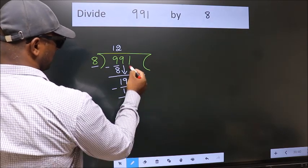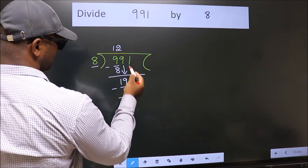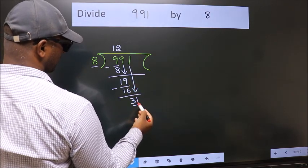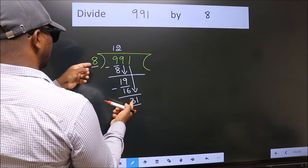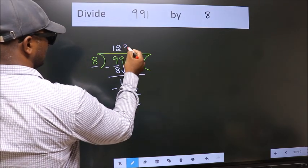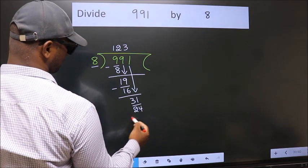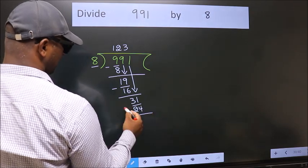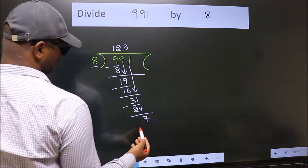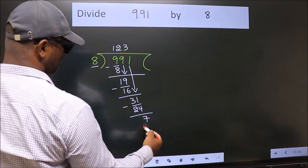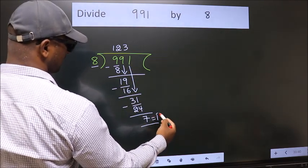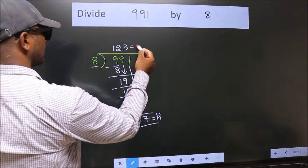After this, bring down the beside number, so 1 down. So 31. A number close to 31 in the 8 table is 8 threes 24. Now we subtract, we get 7. No more numbers to bring down, so we stop here. This is our remainder, this is our quotient.